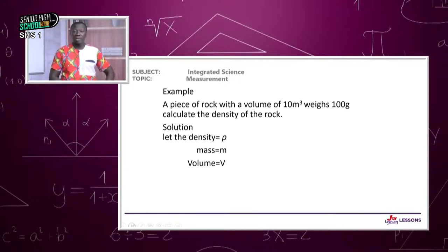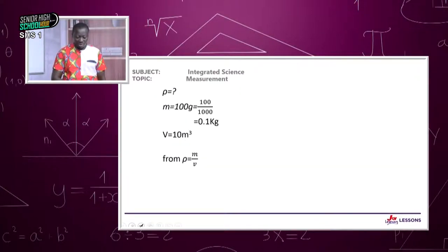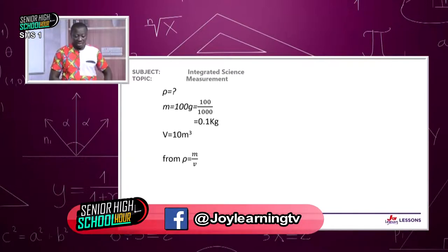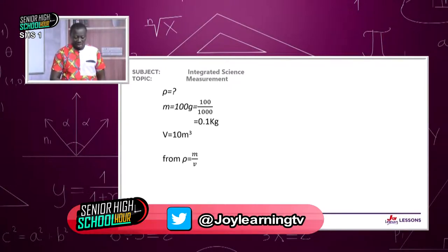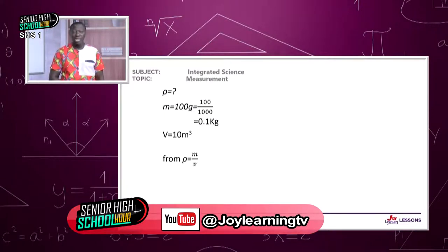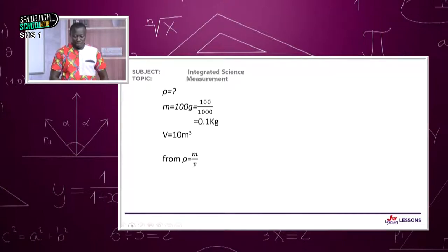Let the density of that rock be rho, the mass M, and the volume of the rock V. Since we have to find the density, we don't have a value for it, but we have to convert the mass from grams to kilograms by dividing by 1,000. The mass was 100 grams, so dividing by 1,000 gives 0.1 kilograms.